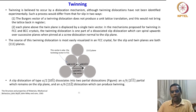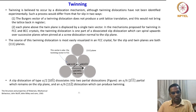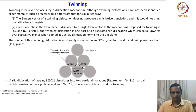A slip dissociation of type a/2[10̄1] dissociates into two partial dislocations: a/6[2̄1̄1̄], which remains on the slip plane, and a/6[11̄2], which can produce twinning. Though the origin of dislocation activity in twinning is not well established, some hypotheses are available based on experimental observations. We will stop here and continue this discussion in the next lecture. Thank you.